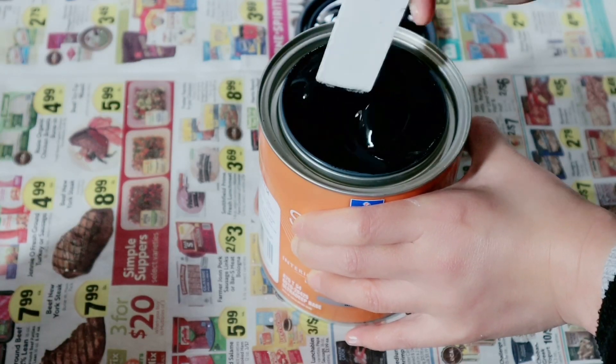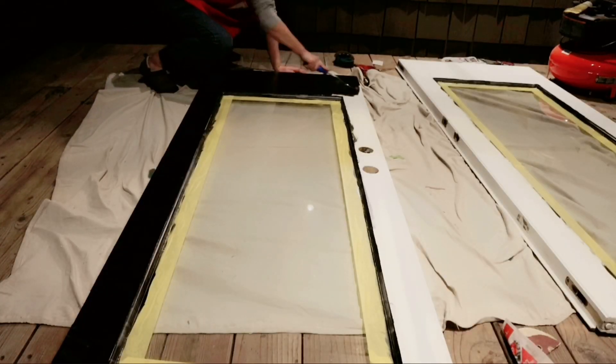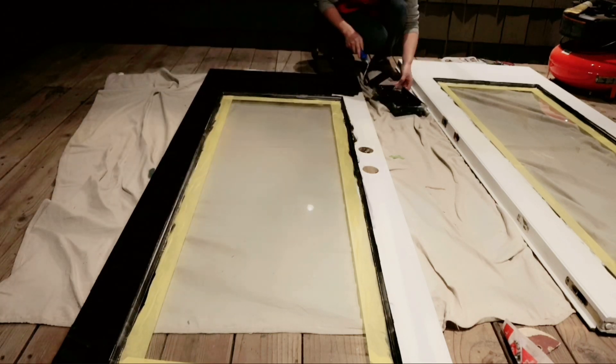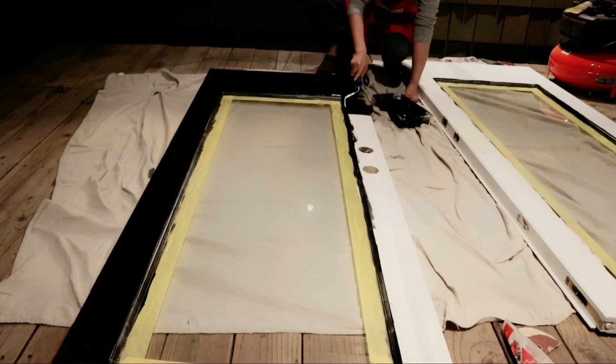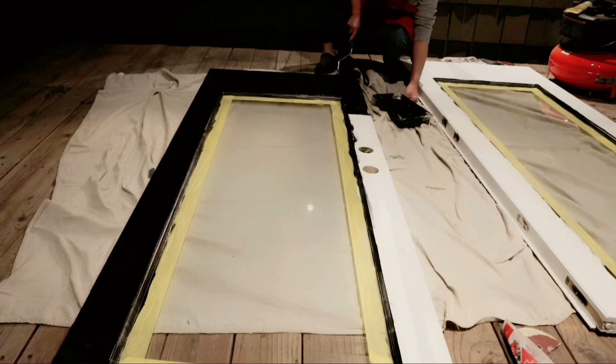After the wall is done, I painted the doors with Sherwin Williams satin black. The color is called Tricorn. And I did two coats.